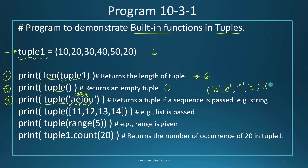In the fourth print statement, I call the tuple() function but this time the argument is a list — you can see the square bracket. This function will convert that list into a tuple, so the result will be 11, 12, 13, and 14. This is how you can convert a list to a tuple.